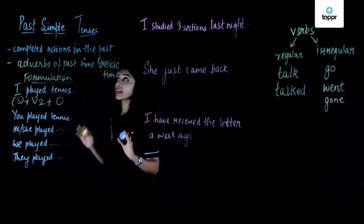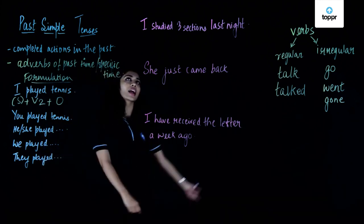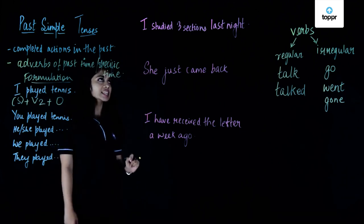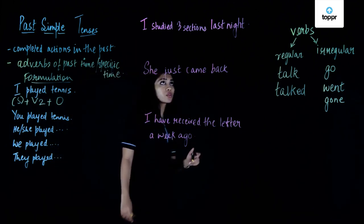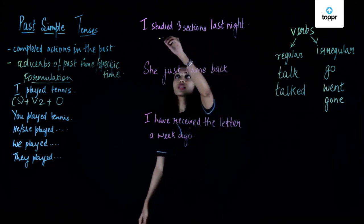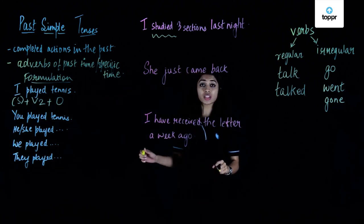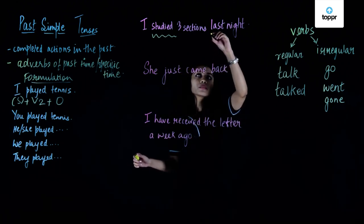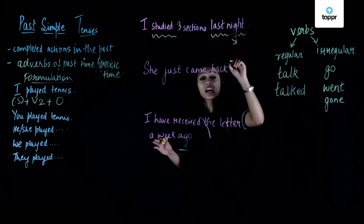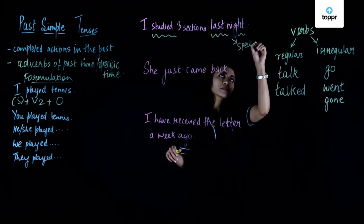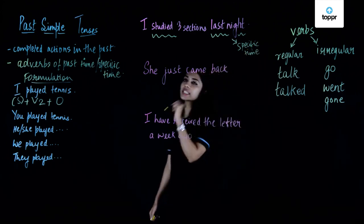Let's understand the past simple tense better with example sentences. The first sentence: 'I studied three sections last night.' This is a completed action — I have already finished studying three sections — and when did I do it? Last night. So a specific time is mentioned here.